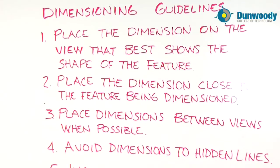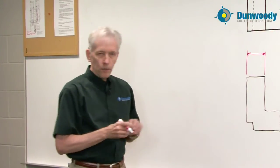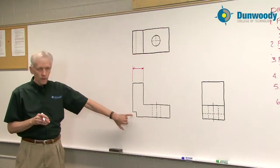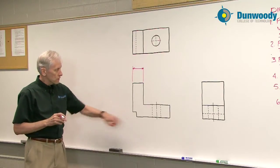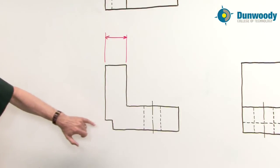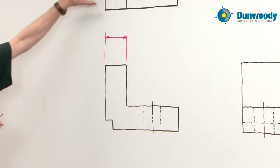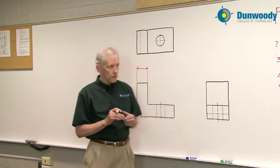Dimensioning guideline number two says place the dimension close to the feature being dimensioned. This is another one I feel is very important. I'm going to illustrate that with this notched corner on this part. We have to dimension this notch and it's shown on the front view with object lines. It's shown on the top view with a hidden line. It's shown on the right side view with a hidden line.